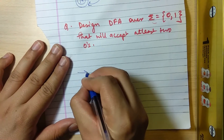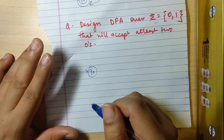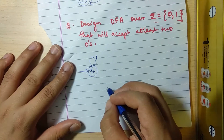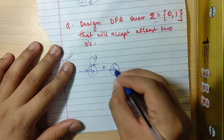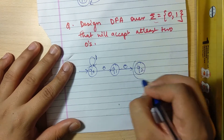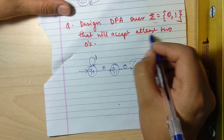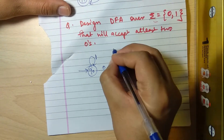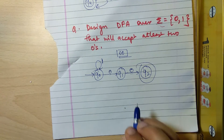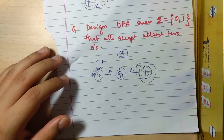The approach: first draw the initial state q0. If it encounters '1', send it to a self-loop. If it encounters '0', go to q1. If q1 encounters '0' again, go to q2, which will be our final state. The shortest string satisfying 'at least two zeros' is '00'. This forms our skeleton DFA.